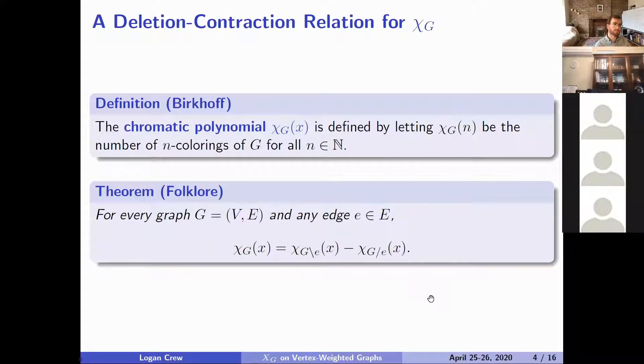This means that they assign different positive integers to each vertex on either side of an edge, and n coloring means that it uses only integers 1 through n. We have this well-known theorem that χ_G of x decomposes as χ of G delete e minus χ of G contract e. A very nice formula. It allows for lots of nice properties to be proven on the chromatic polynomial using induction, for example, on the number of edges, since both of these graphs on the right-hand side have fewer edges.